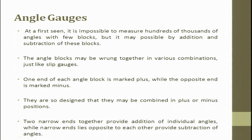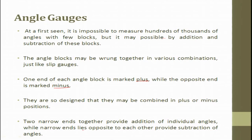At first sight, it seems impossible to measure hundreds of thousands of angles with few blocks, but it is possible by addition and subtraction. The angle blocks may be combined in various combinations just like slip gauges. One end of each angle block is marked plus while the opposite is marked minus, so they may be combined in plus or minus position. Two narrow ends together provide addition; narrow ends opposite to each other provide subtraction.